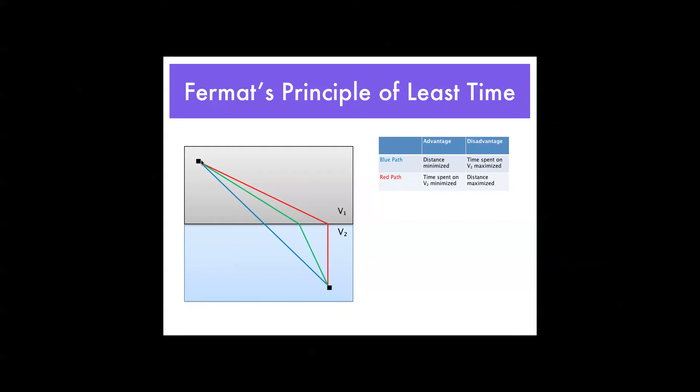So, what is the path of least time? Well, not exactly, being that we don't have numbers here yet, but just an approximation would be the green path. A perfect balance of the two that takes advantage of minimizing distance on V2, or time spent on V2, and not maximizing the overall distance so much.